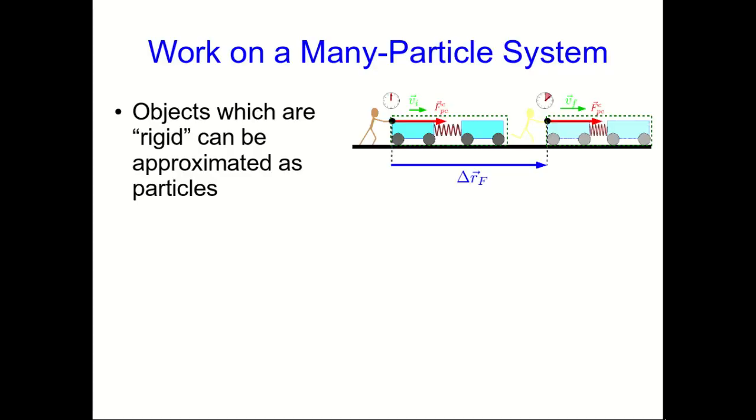Real systems are usually not single particles. So how do we deal with them? Well, at least objects which are reasonably rigid can be approximated as particles. And so in our cart and spring system, we could think of the carts as particles. What about the springs, though?